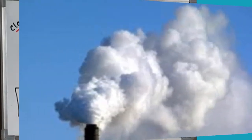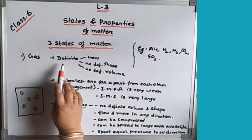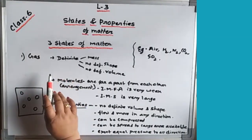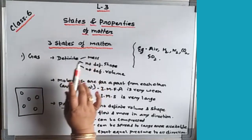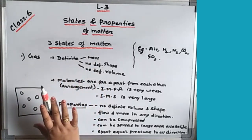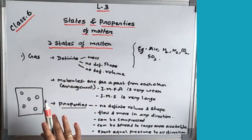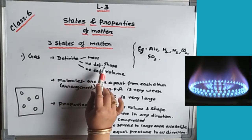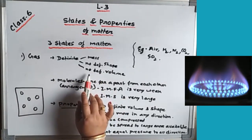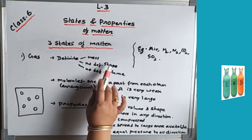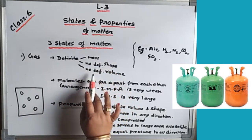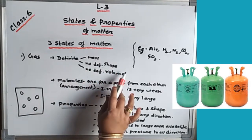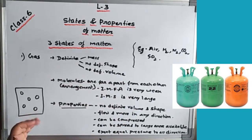Now we will see the third state of matter — gas. Gas has a definite mass — gases also have mass — but no definite shape and no definite volume. It has neither definite shape nor definite volume.